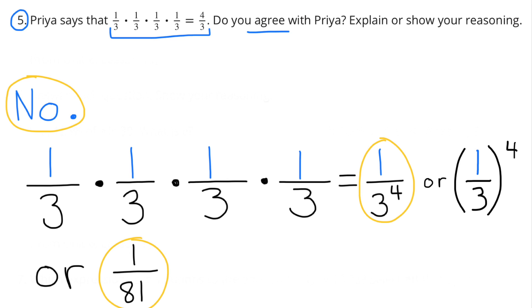because 1 third plus 1 third plus 1 third plus 1 third would equal 4 thirds. And addition is different than multiplication. So 1 third times 1 third times 1 third times 1 third would equal 1 over 3 to the fourth power,